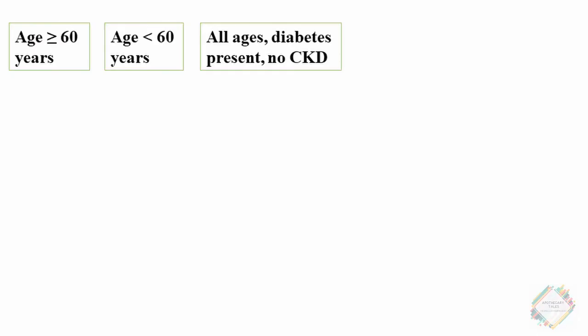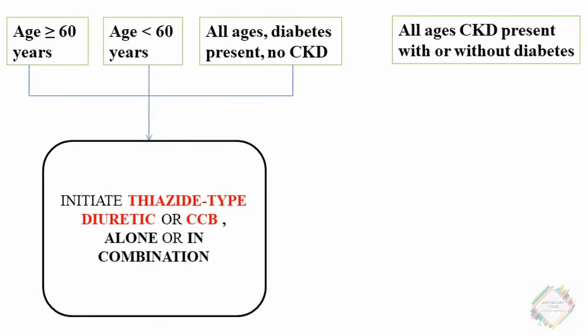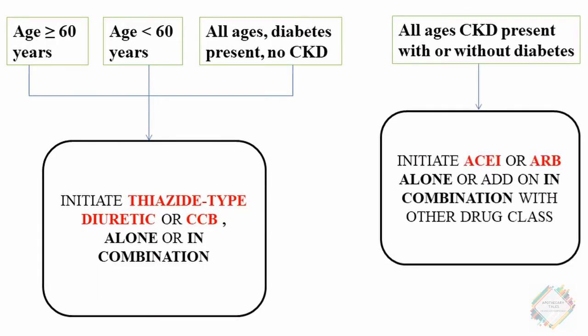After categorizing into four categories, we initiate the first-line agents. For the first three categories — age greater than or equal to 60 years, age less than 60 years, and all ages with diabetes and no CKD — we initiate with a thiazide-type diuretic or CCB alone or in combination. For all ages with CKD with or without diabetes, we initiate ACE inhibitors or ARBs alone or in combination with other drug classes.